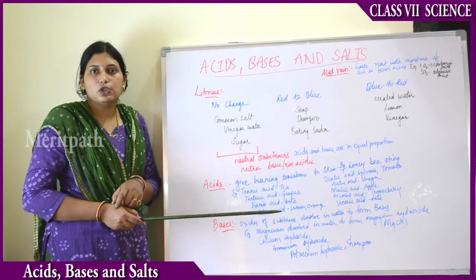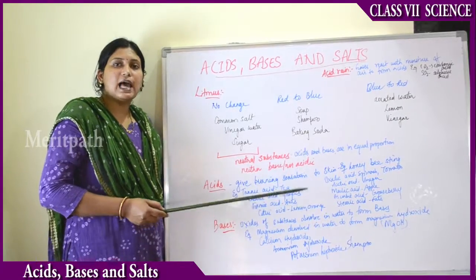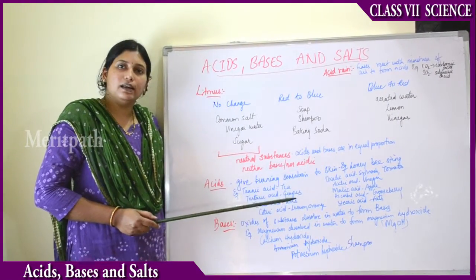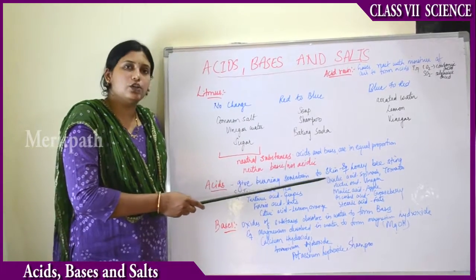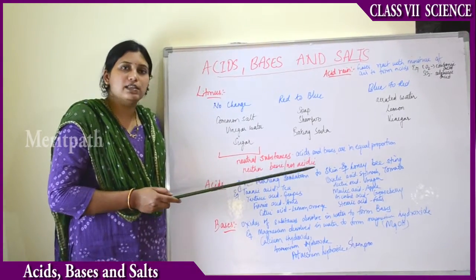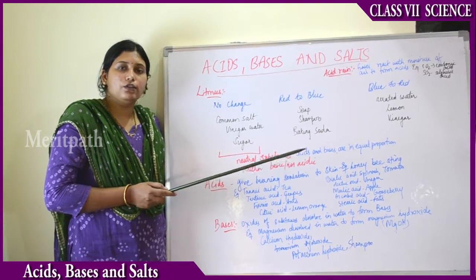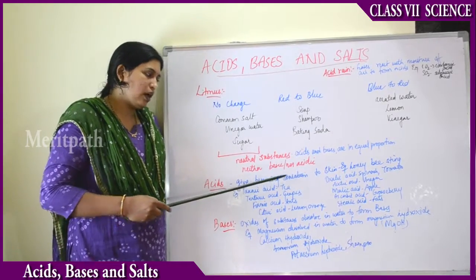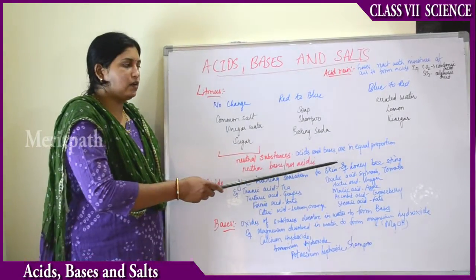A honey bee releases acid into your skin — the mouth of the honey bee contains acid. So acids give a burning sensation to your skin. Not only honey bee stings, but any type of chemical acid you get in the laboratory, if applied to your hand, can cause a burning sensation.